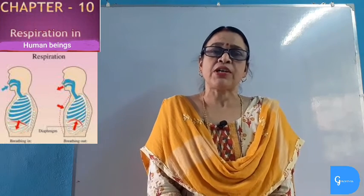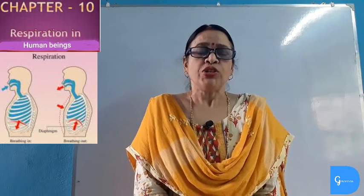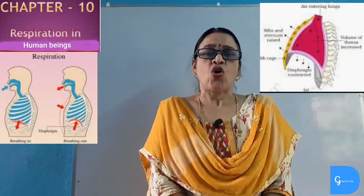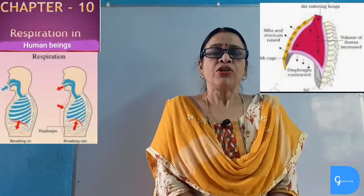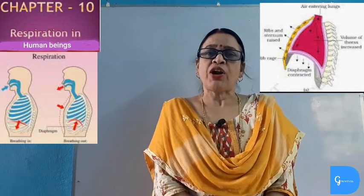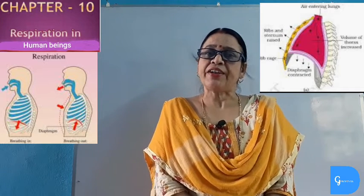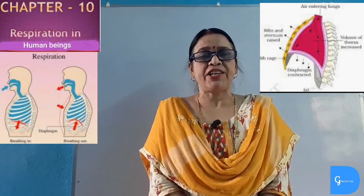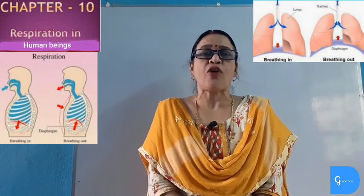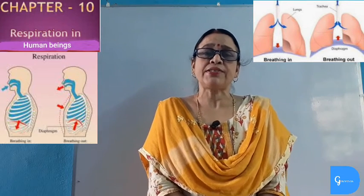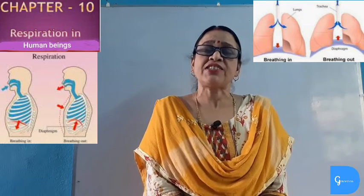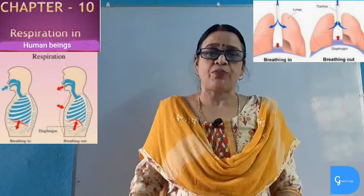During inhalation, the intercostal muscles and diaphragm contract. The rib cage elevates, moving up and outward, while the diaphragm flattens, increasing the volume of the thoracic cavity and lungs in all directions — up, outward, and downward. According to Boyle's law (P1V1 = P2V2), when volume increases, pressure decreases. So the pressure inside the lungs drops to 758 mmHg, while atmospheric pressure outside is 760 mmHg, causing air to rush into the lungs.